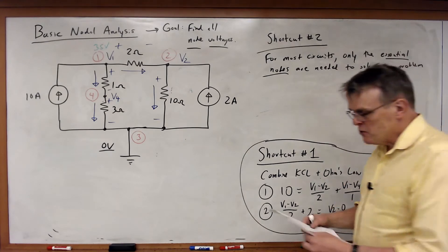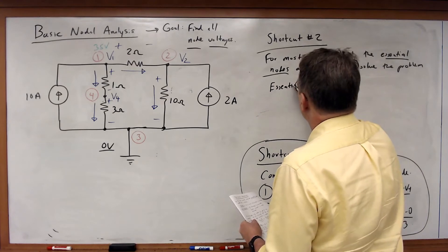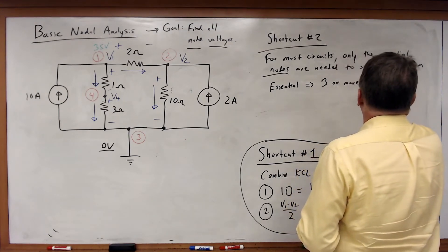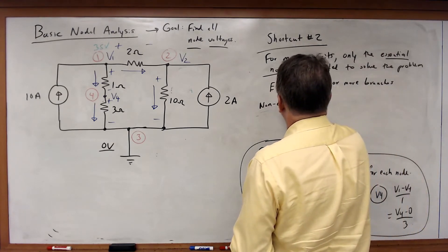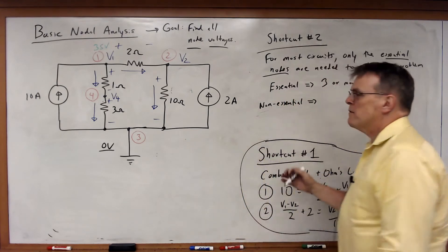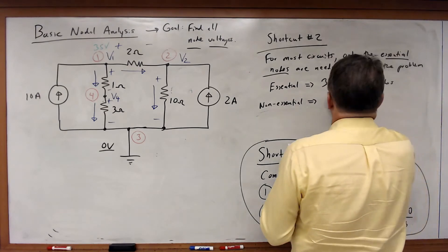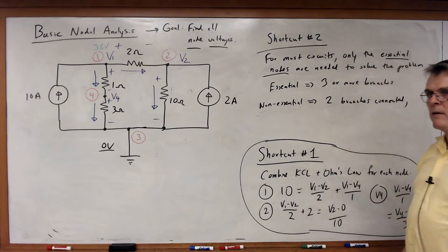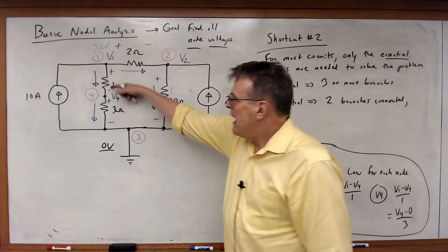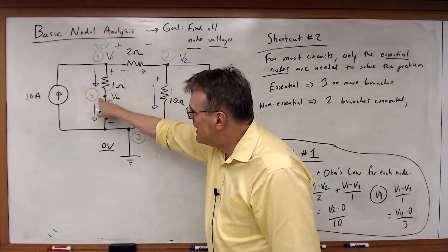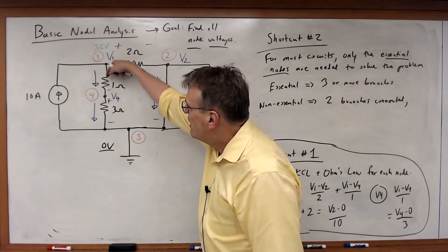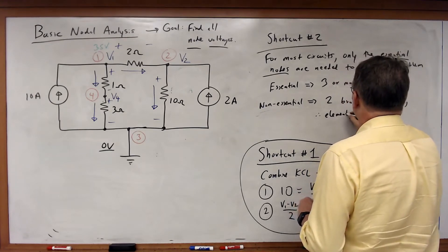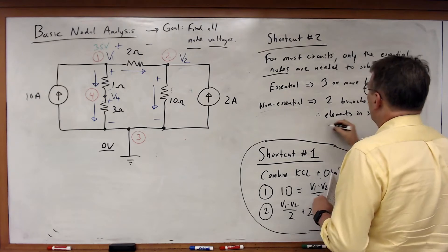What do I mean by essential nodes? An essential node is a node that has three or more branches connected to it. A non-essential node occurs when we have a node with only two branches — two elements connected to it. When two branches are connected and there's nothing else connected between them, as in node four here, that is a non-essential node. Clearly, those two elements are in series, and therefore they have the same current.